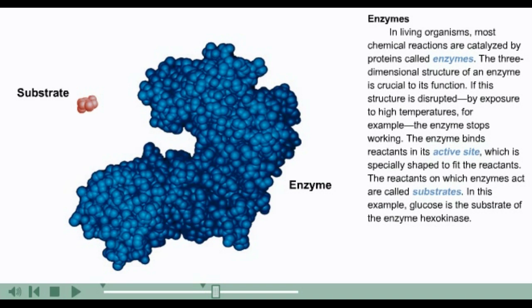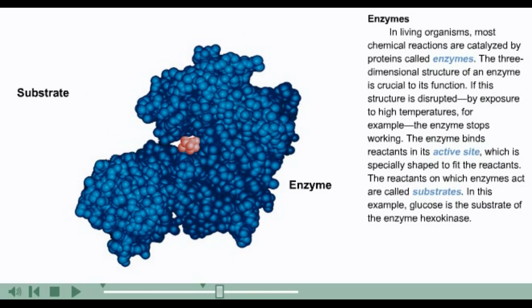The enzyme binds reactants in its active site, which is specially shaped to fit the reactants. The reactants on which enzymes act are called substrates. In this example, glucose is the substrate of the enzyme hexokinase.